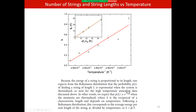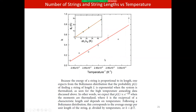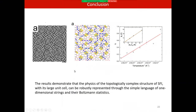The probability of finding a string of a given length follows exponential minus L times k, where k is the reciprocal of a characteristic length depending on temperature — consistent with thermalized moments. Following a Boltzmann distribution, this corresponds to average energy per unit length of the string. Here k equals five divided by temperature, so the inverse of string length has a linear dependence on one over temperature.